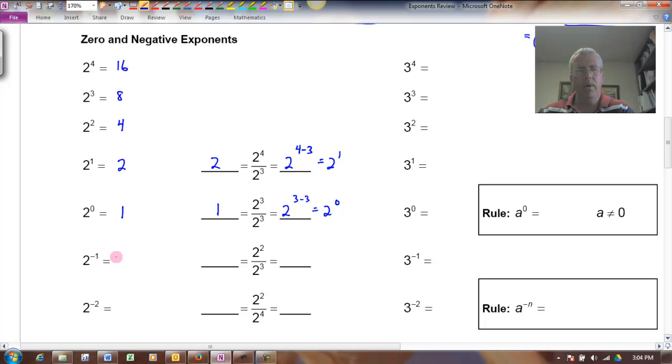When I move on to negative exponents, if I were to think of 2 to the negative 1, if I just follow that pattern and divide by 2, 1 divided by 2 is a half. And that makes sense in terms of my quotient rule. If I had 2 squared over 2 cubed, that would be 2 to the 2 minus 3, which is 2 to the negative 1. And just canceling these, that would give me a half. So 2 to the negative 1 does make sense that that is equal to a half.